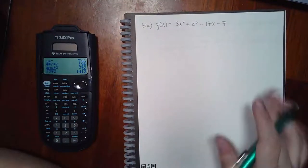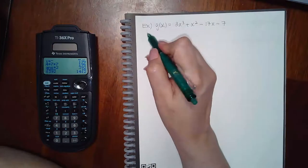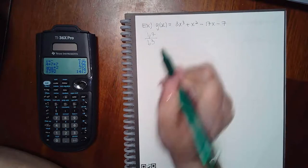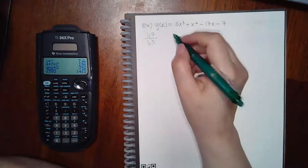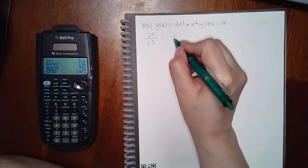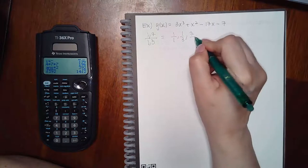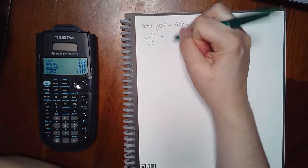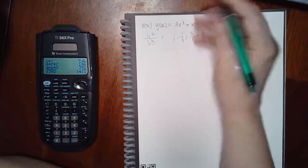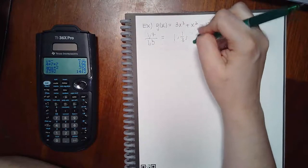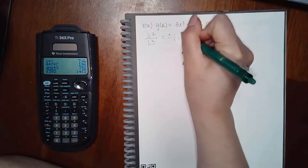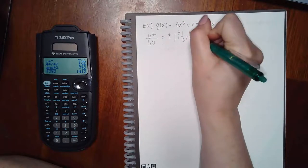So let's take the possible rational zeros theorem, so factors of 7, the constant, over factors of the leading coefficient which is 3, and then all the combinations. So 1 over 1, 1 over 3, 7 over 1, and 7 over 3. And then we can write these as whole numbers, so just 1 and 7, and then remember you have all the possible sign combinations that can come with these numbers.